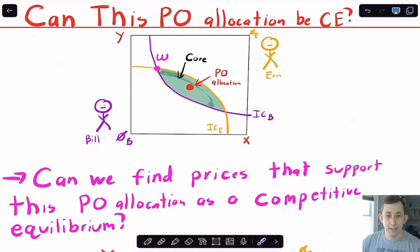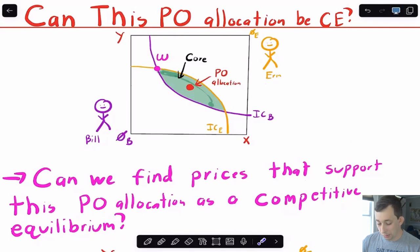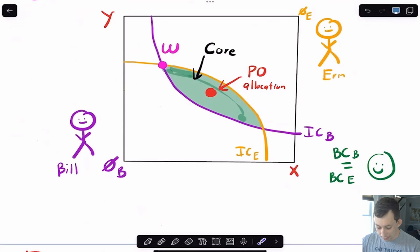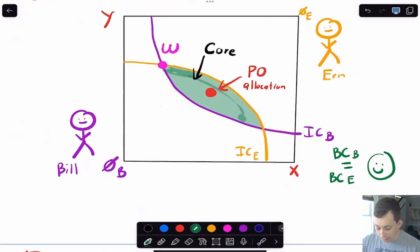Now turning to the question about competitive equilibrium and Pareto optimality: what we're basically asking is whether this Pareto optimal allocation can be supported as a competitive equilibrium. This boils down to whether we can find some market prices such that we get this Pareto optimal allocation — but rather than doing it through a social planner problem, we do it through Bill and Aaron separately and privately maximizing their utility.